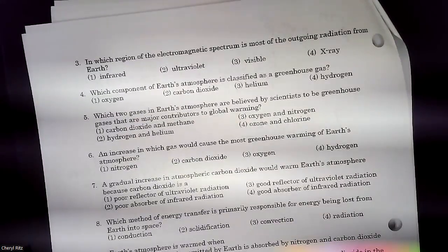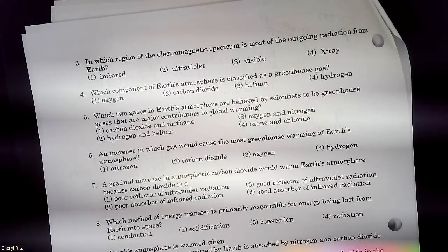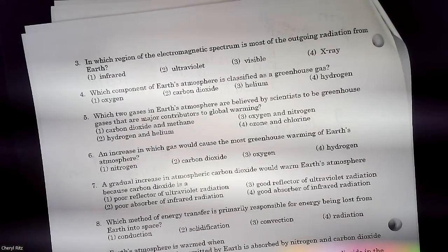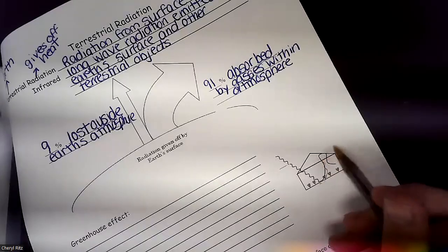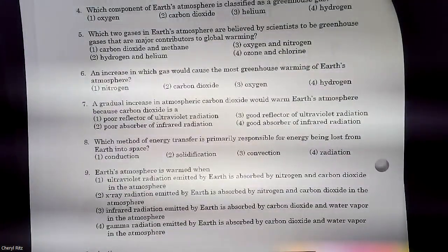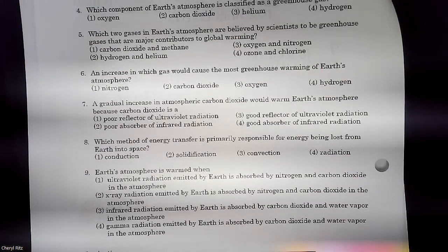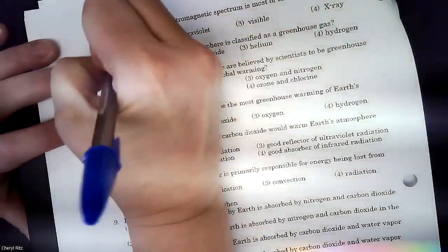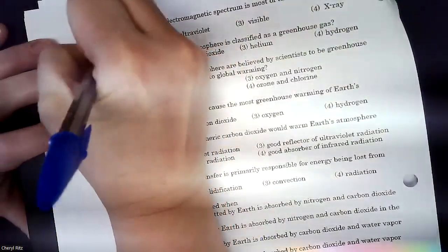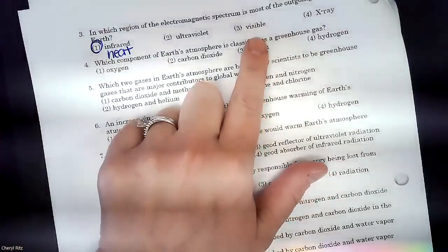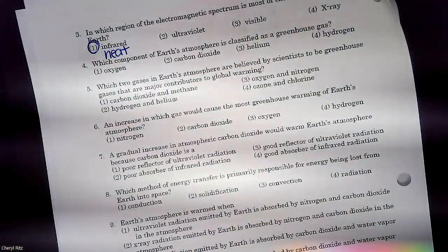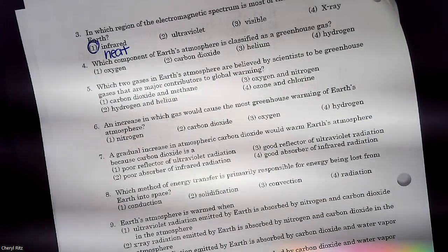Which region of the electromagnetic spectrum is most of the outgoing radiation from Earth? That's that same radiation we were talking about. This one, the one that's trying to leave Earth. Which one is leaving Earth? So it is the infrared, which is the heat waves, that the Earth gives off. Visible light is the one coming in. So visible is coming in, heat's going out.